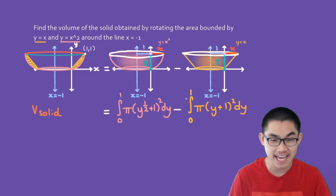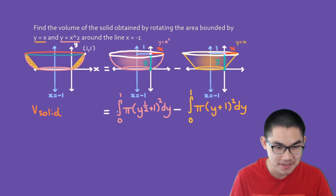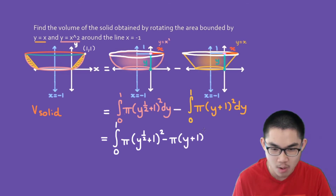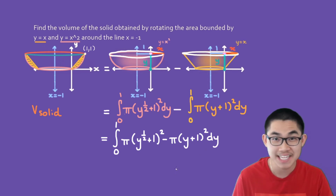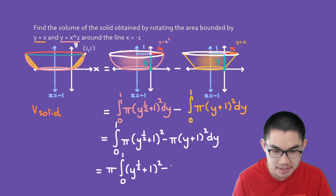Since both integrals have the same boundaries, we can combine them into one integral. This gives us the integral from 0 to 1 of pi times (y^(1/2) + 1) squared minus pi times (y+1) squared, dy. Factoring out pi: pi times the integral from 0 to 1 of (y^(1/2) + 1)² minus (y+1)² dy.